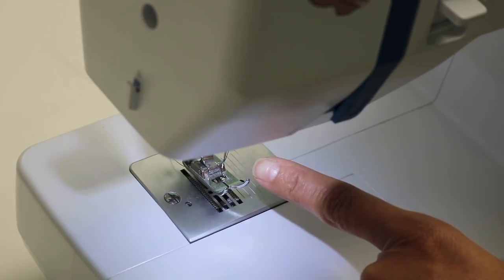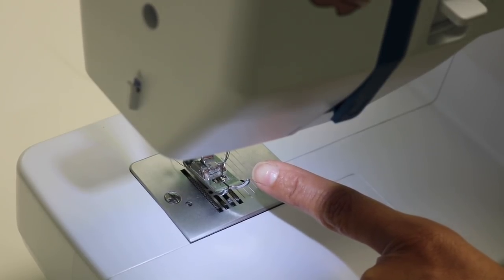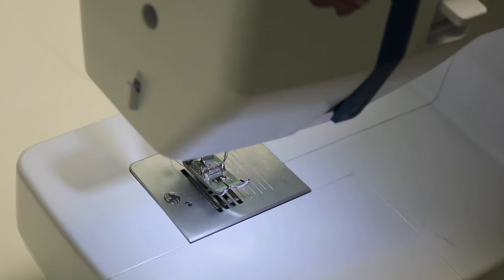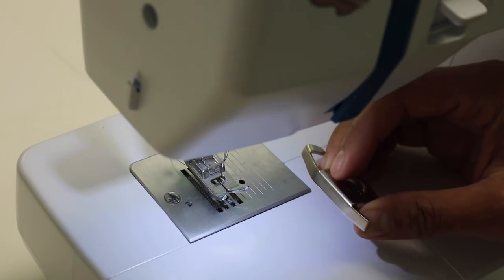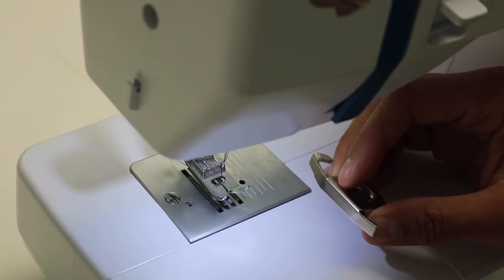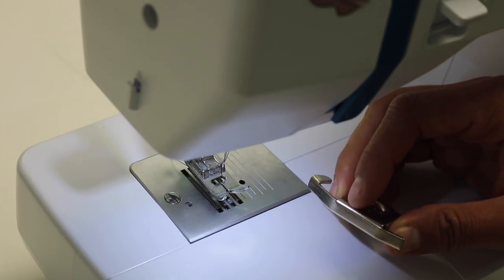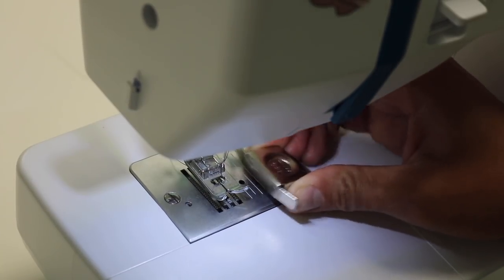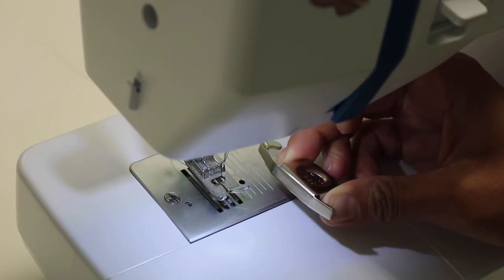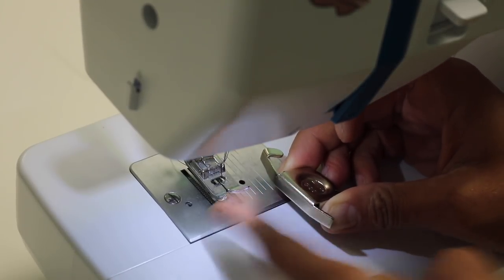Obviously the higher end your machine is, the more needle position settings you will probably have. So if we have it right there at the center, which is in the center of my presser foot, and we're working on a project that tells us the seam that you're going to sew here needs to be 5/8 of an inch, so I need to place this so that the edge of the magnetic seam guide is 5/8 of an inch from where the needle is, right?